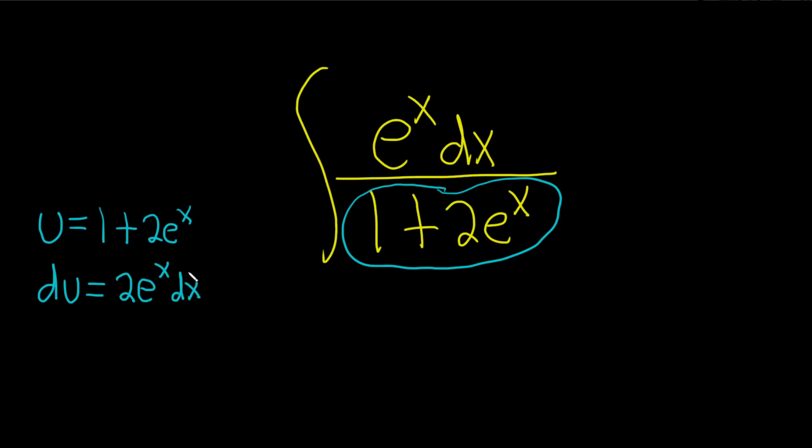And now our goal is to make this look like what's in our integrand over here. So it's almost there, we just have this extra 2. So what we can do is just divide by 2. This will become 1 half du, and that's equal to e to the x dx.